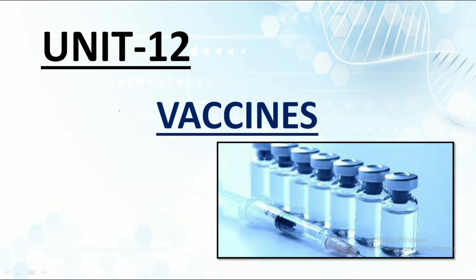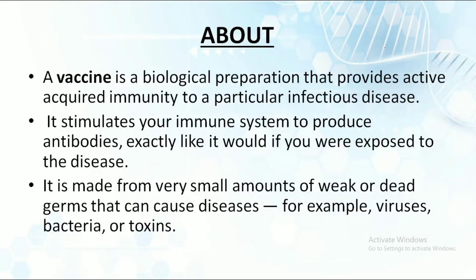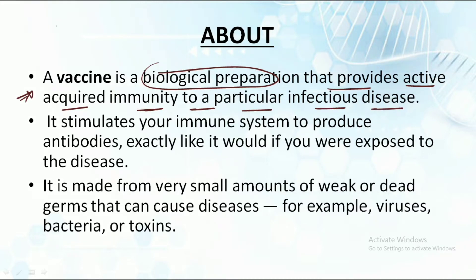Hello everyone, welcome to Botany Insider. In this lecture we'll be dealing with the topic of vaccines, which is one of the subtopics from Unit 12. A vaccine is a biological preparation that provides active acquired immunity to a particular infectious disease. It stimulates our immune system to produce antibodies, exactly the same way as if we were exposed to the disease.